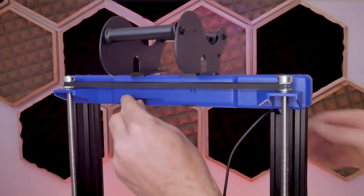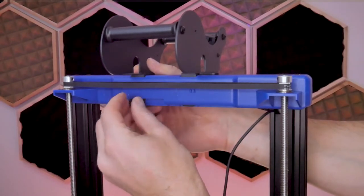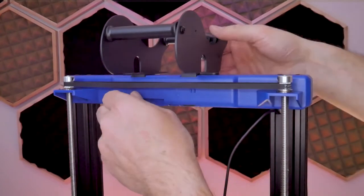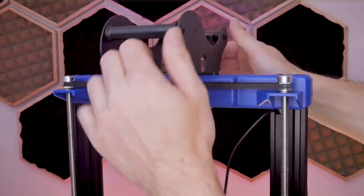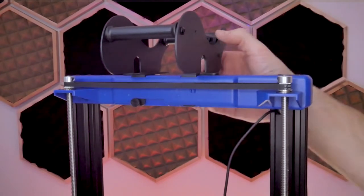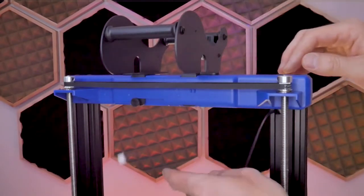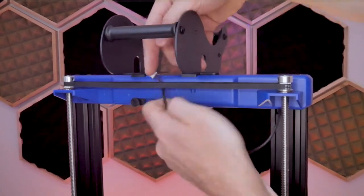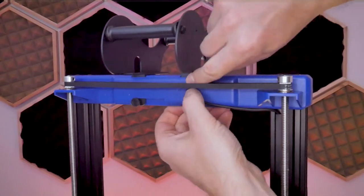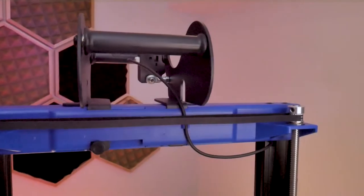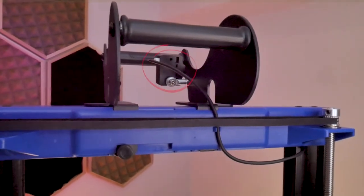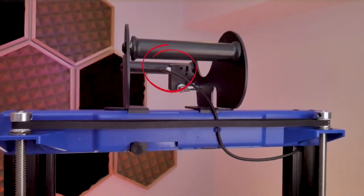Then you can grab the connector for the filament runout detection sensor and you can loop it in behind the z-axis synchronization belt. There is a small wire retaining feature on the blue plastic where you can push the wire in and ensure that it does not eventually rub on those moving belts. Then the wire will get looped around to the front of the machine where the filament runout detection sensor resides on the spool holder bracket. Simply plug the connector into the sensor and the spool holder is taken care of.